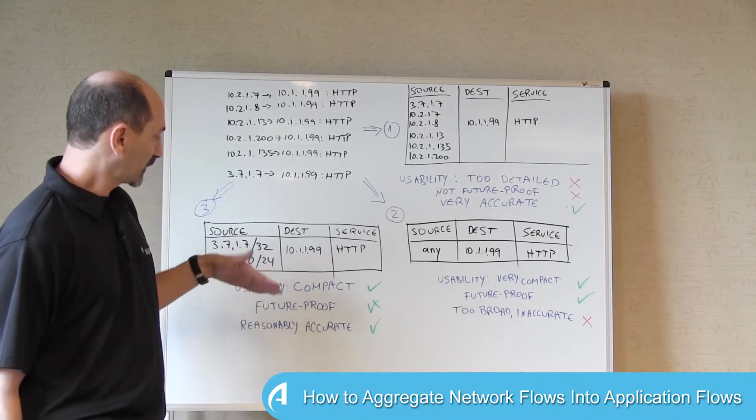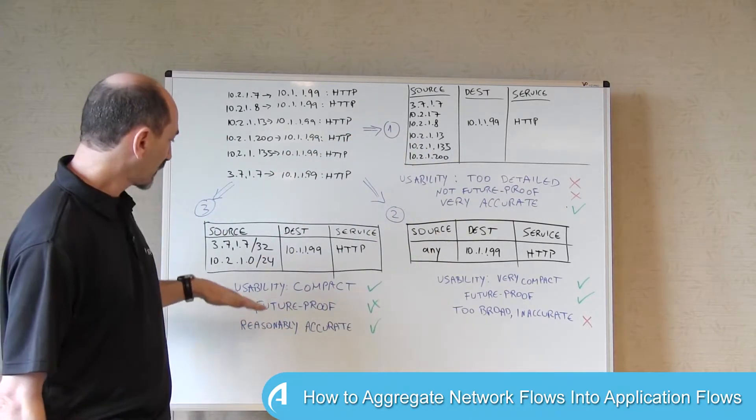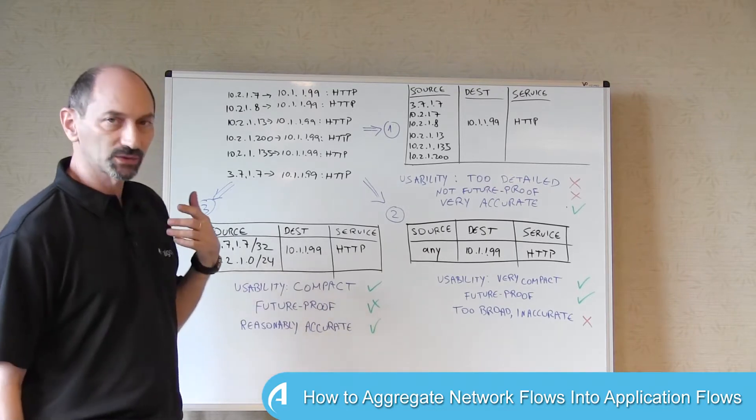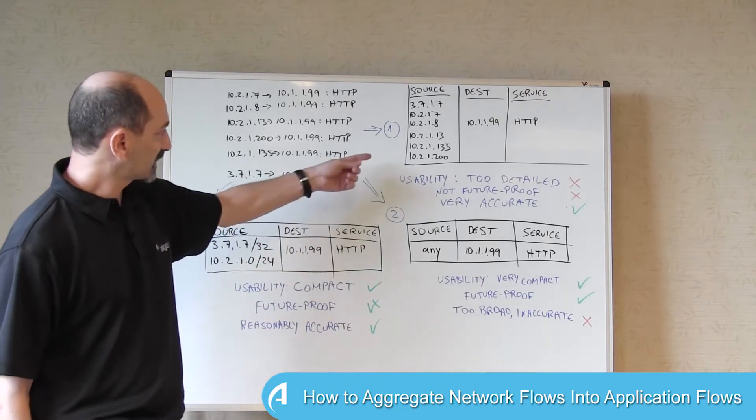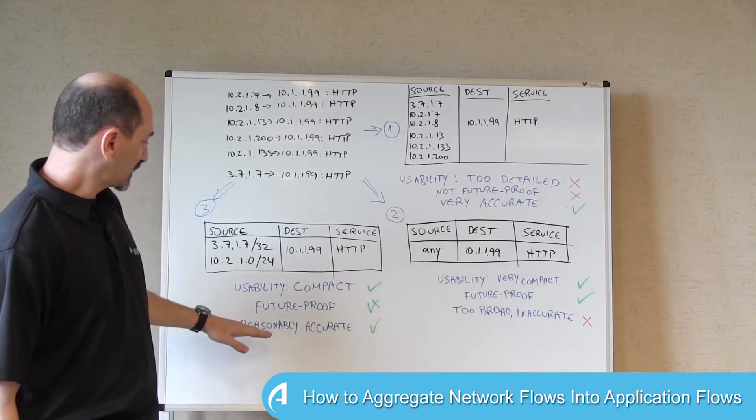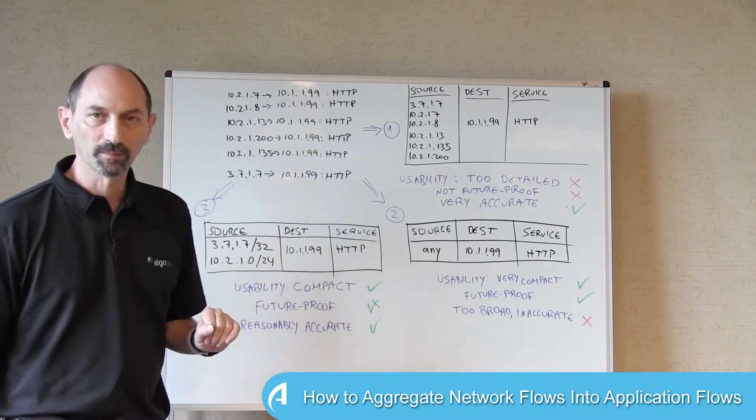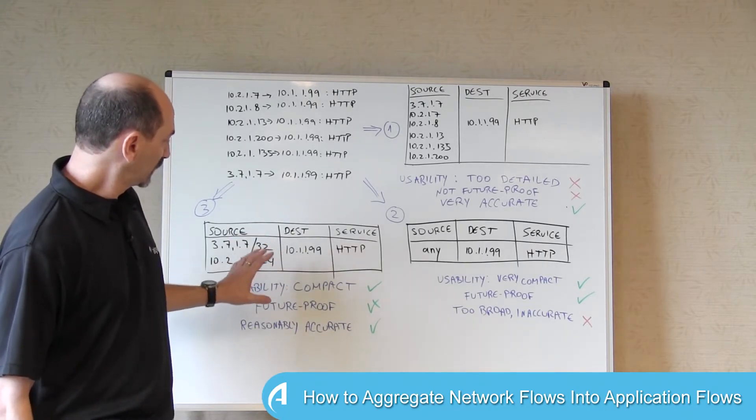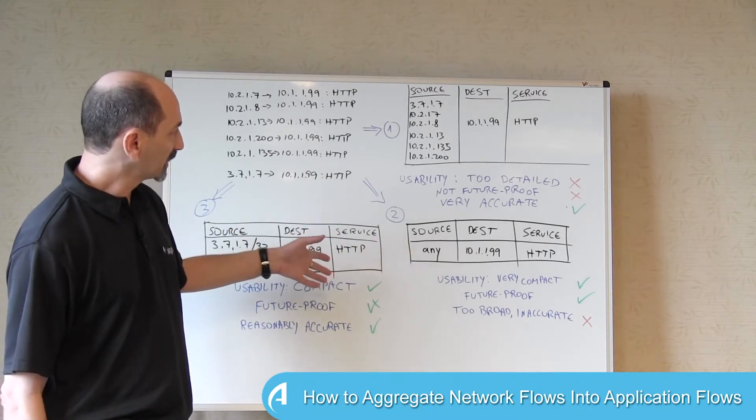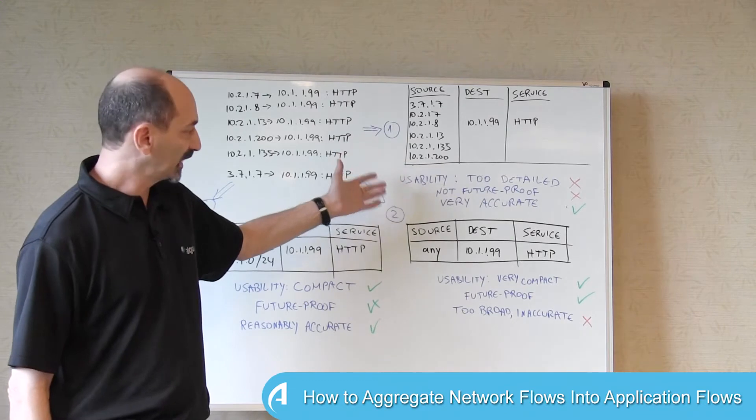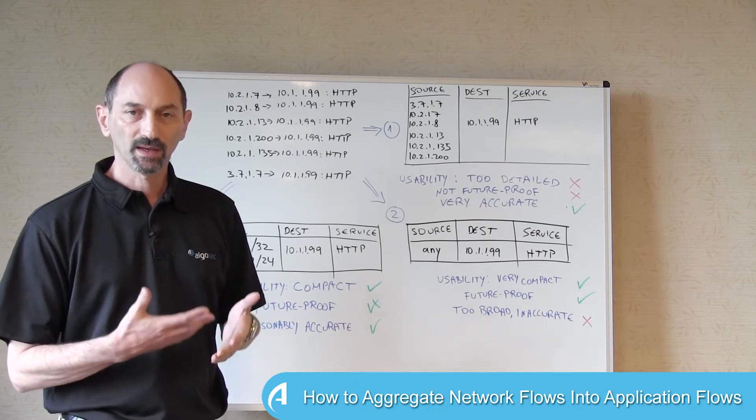So it is future proof up to a point. All the IP addresses in the 10.2 subnet are described by this flow, but it's not too accurate and it's not as detailed as we had up here. And it's reasonably accurate and quite usable because it's still very compact. So it is possible to find this middle ground algorithmically trying to balance the accuracy against the usability and to produce a compact representation that's still reasonable and usable.